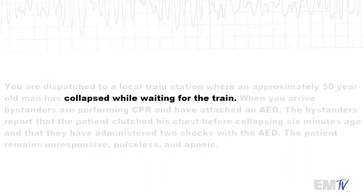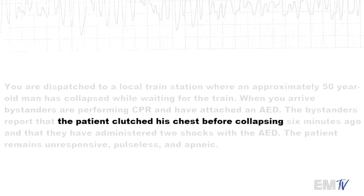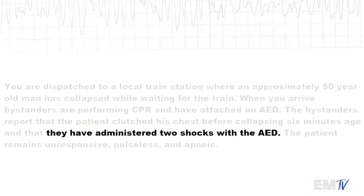Now let's take a look at the scenario. By default it's important to remember that v-fib is never considered stable — this is always unstable. Your patient collapsed while waiting for the train. They're performing CPR and have attached an AED. Before the patient collapsed he clutched his chest. Now this isn't really important to your treatment per se, but this may be something that you'd mention perhaps in the H's and T's. They've administered two shocks with the AED, which again points me towards ventricular fibrillation as the diagnosis.